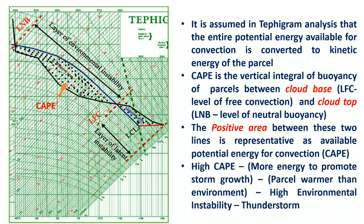High CAPE means more energy to promote storm growth, where the parcel is warmer than the environment, indicating high environmental instability and the potential formation of thunderstorms.